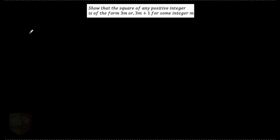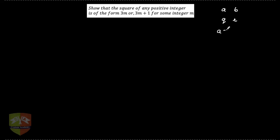Hello friends, in this session we are going to deal with another question which requires application of Euclid's Division Lemma. Now, Euclid's Division Lemma states that if there are two positive integers a and b, we get another pair of integers q and r. By Euclid's Division Lemma, a can be expressed as b·q plus r, where a is the dividend, b is the divisor, q is the quotient, and r is the remainder.